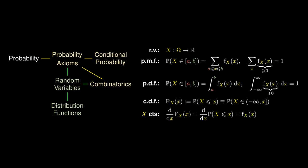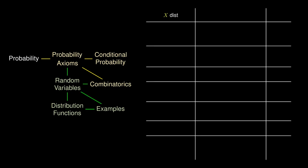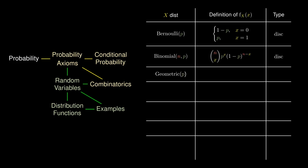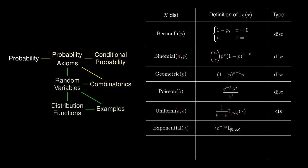There are several common random variables, some discrete and some continuous, that we commonly encounter in college probability. These include the Bernoulli distribution, the binomial distribution, the geometric distribution, and the Poisson distribution as discrete random variables, as well as the uniform distribution, exponential distribution, and normal distribution as continuous random variables.